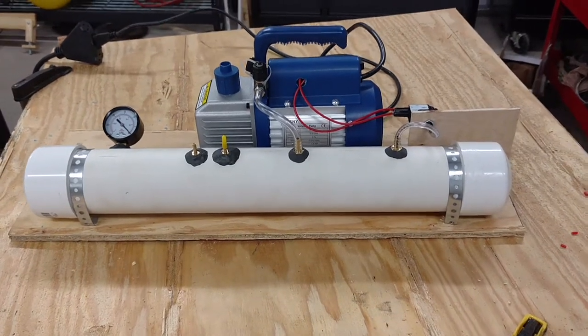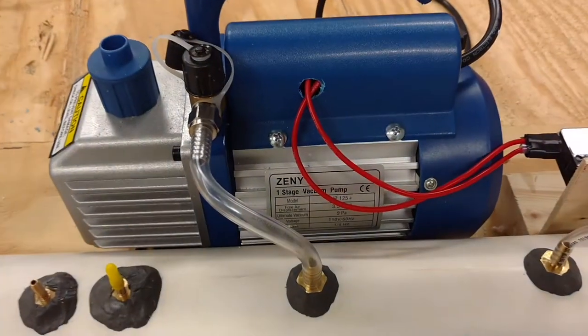Here's my homemade vacuum pump setup for bagging foam core wings. The pump itself is a Xenia unit from Amazon.